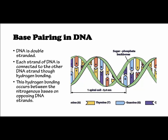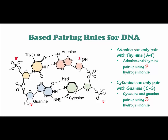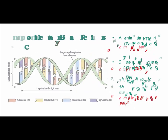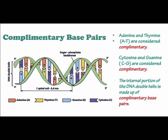DNA is double-stranded, and each strand is connected to the other through hydrogen bonding between the nitrogenous bases on opposing strands. Adenine can only pair with thymine, creating two hydrogen bonds. Cytosine can only pair with guanine, creating three hydrogen bonds. Adenine and thymine are considered complementary, as are cytosine and guanine. The internal portion of the DNA double helix is made up of these complementary base pairs.